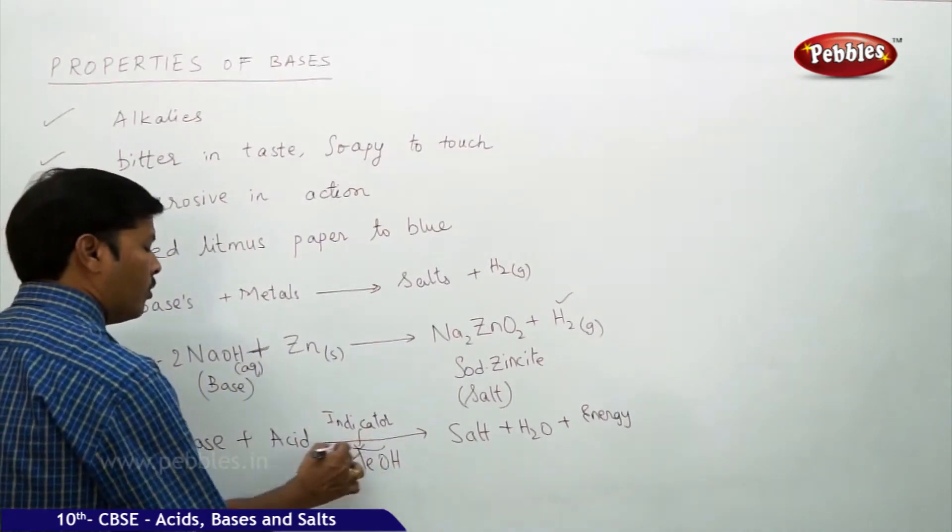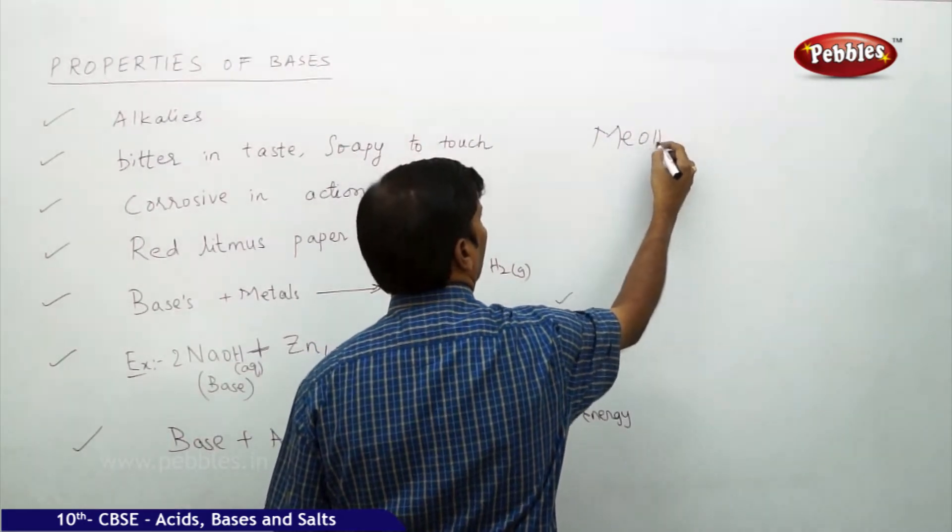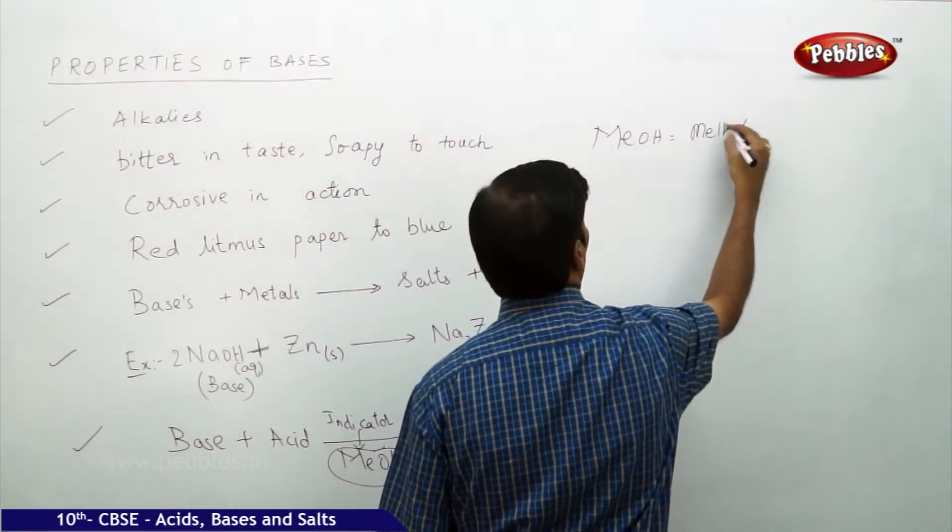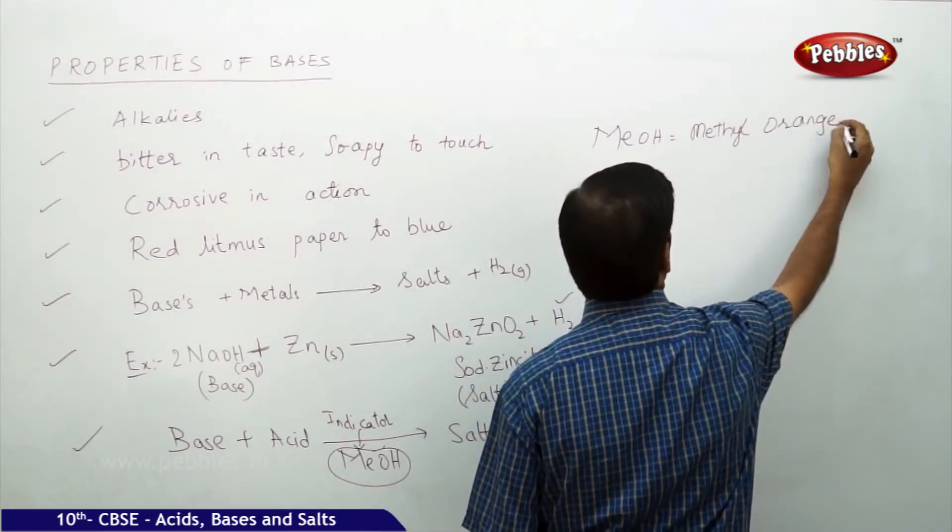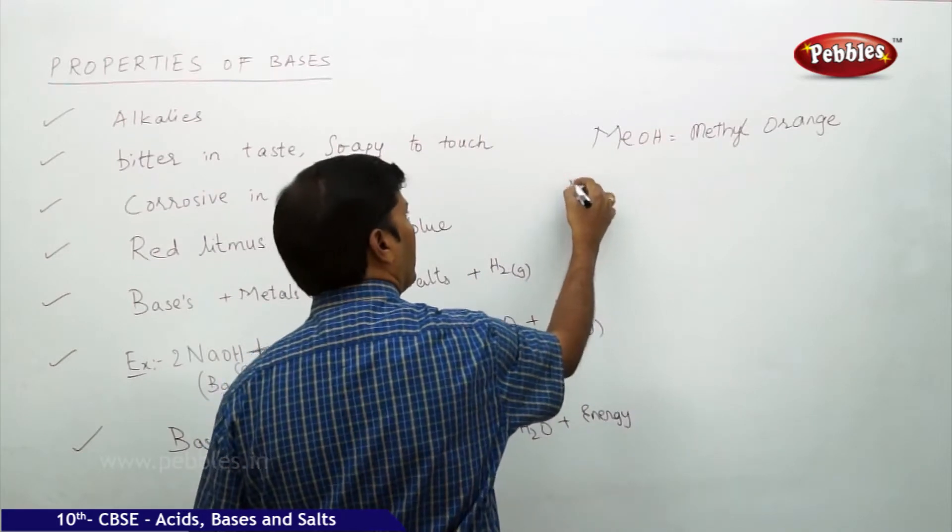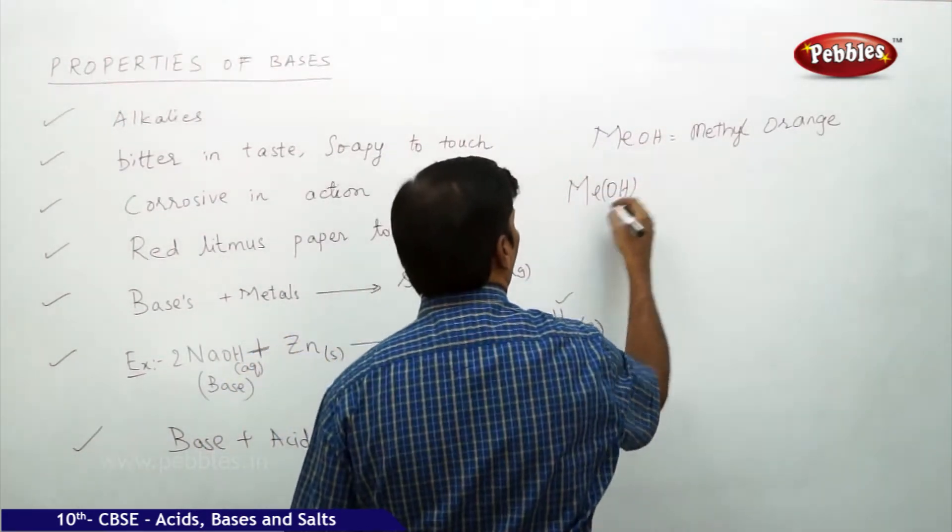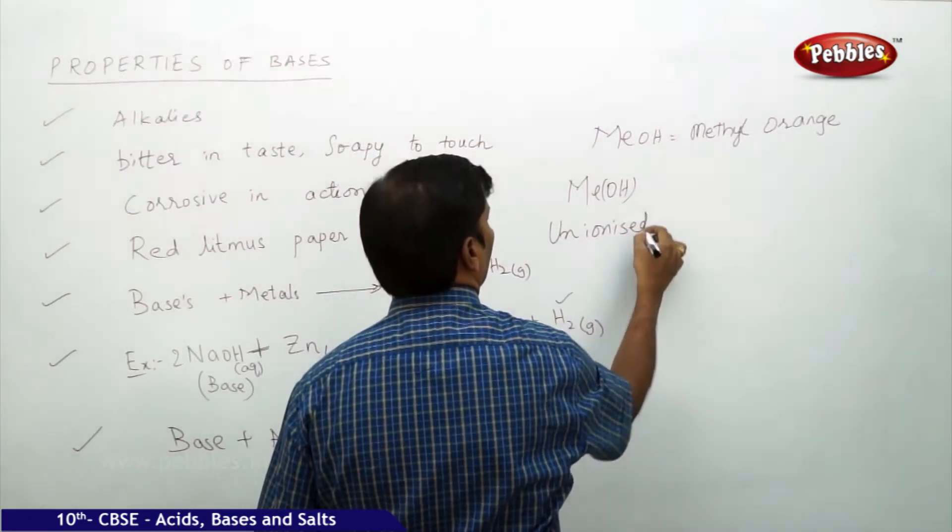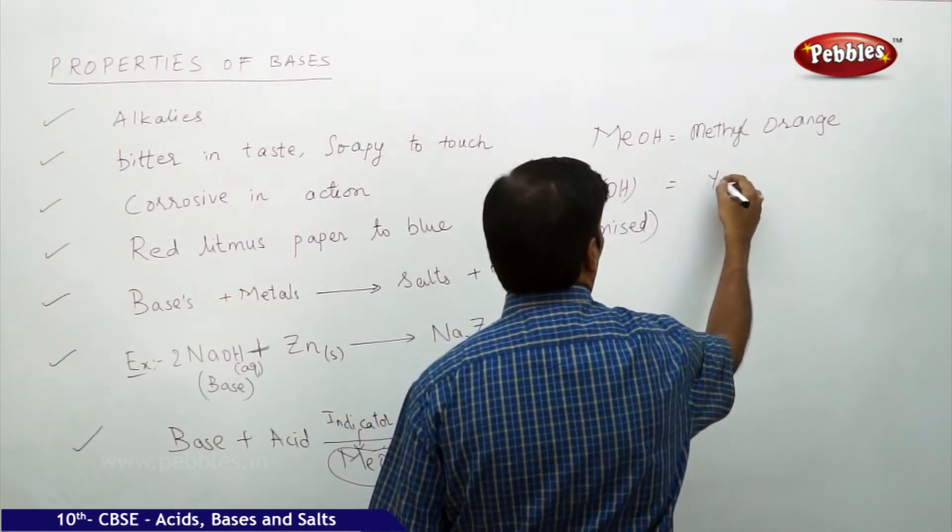This MeOH is called methyl orange. This methyl orange in the unionized form, in the unionized state, it is yellow.